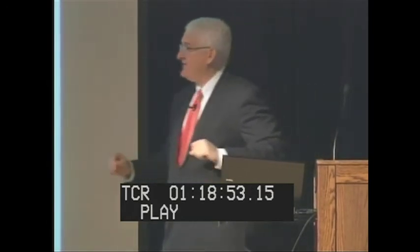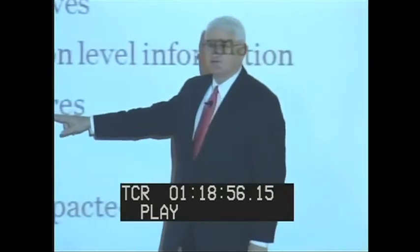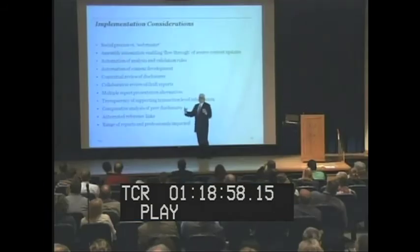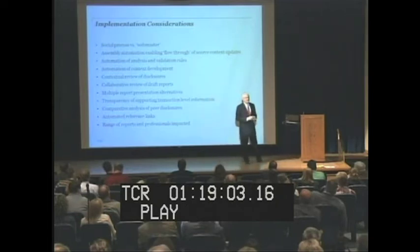Validation rules — this is where your report blue-checks itself. Does my report work? Does the math all work? I can even put risk assessments in there. Comparative analysis of peer disclosures — I can build that into my drafting process. Why is that important? We've all been doing benchmarking for a long time, but I've mentioned it twice now.